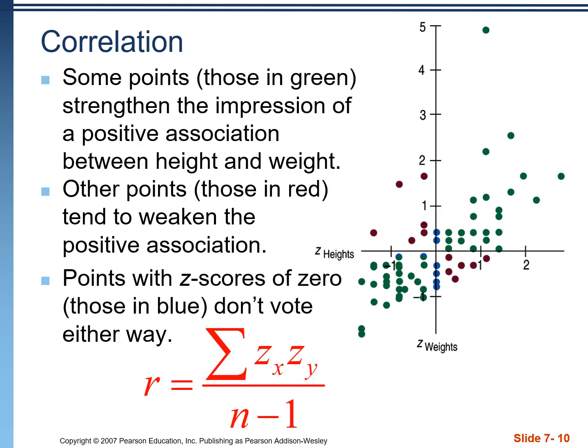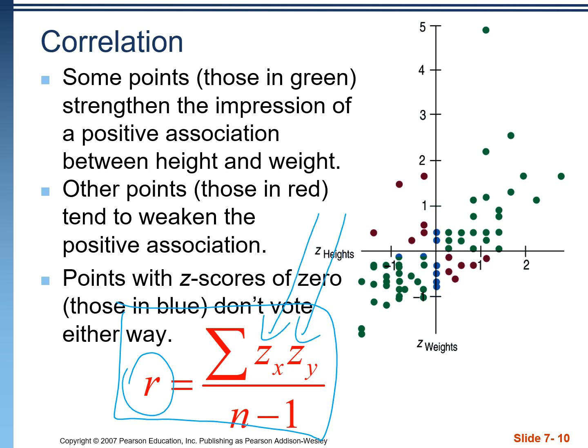There's a somewhat involved explanation as to how this correlation value is calculated. They pretty much never ask you these types of questions on the AP test, so we'll skip it. If you're asked a correlation question, they're either going to give you that R value, or you'll use your calculator to figure it out. One thing you might be expected to know is that the correlation value R is calculated using Z-scores. Each point in a scatterplot has its own two Z-scores — one for the x-axis and one for the y-axis — and that's why the correlation doesn't change when we shift the data or scale it by changing units.